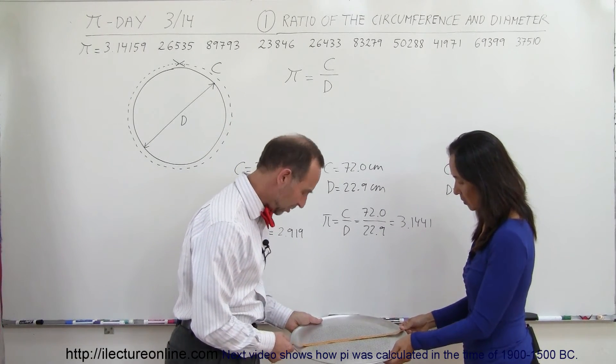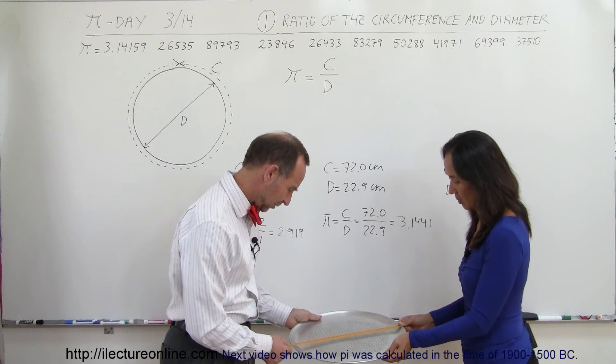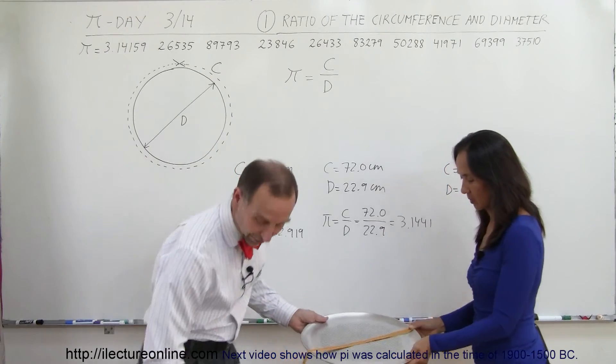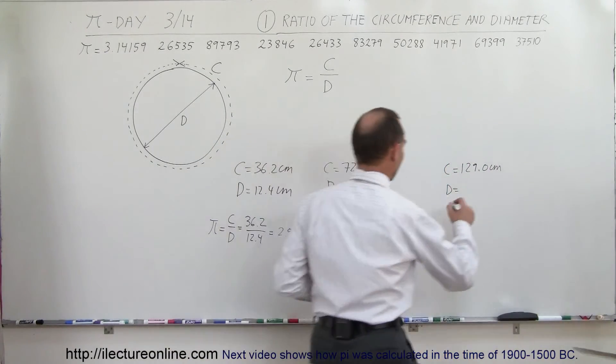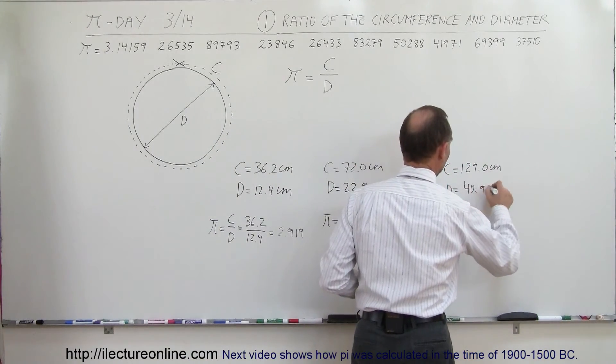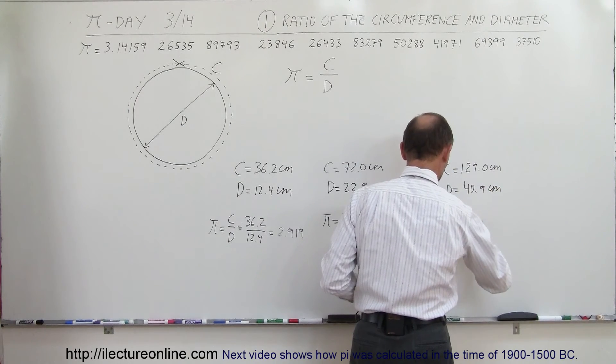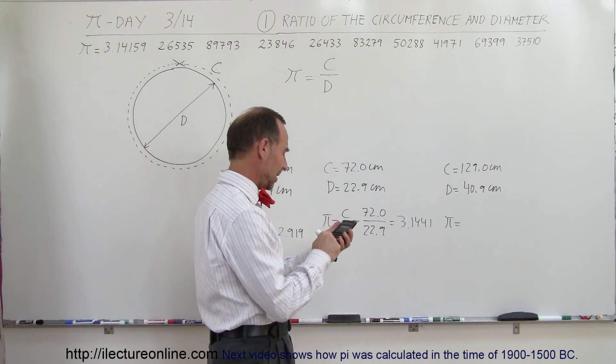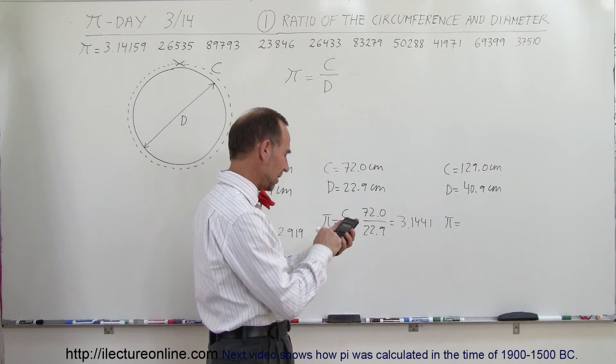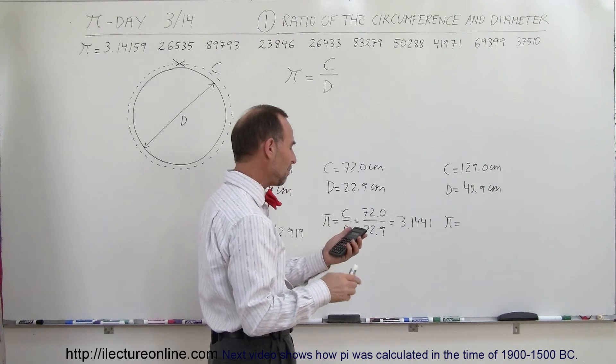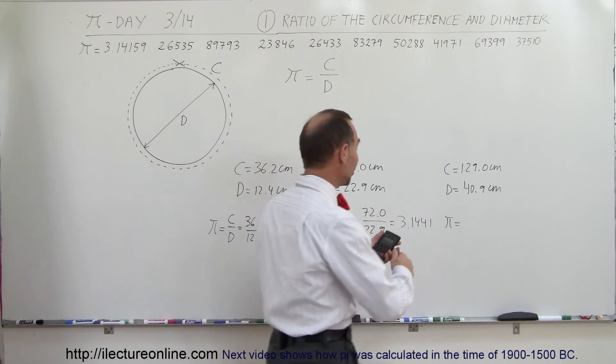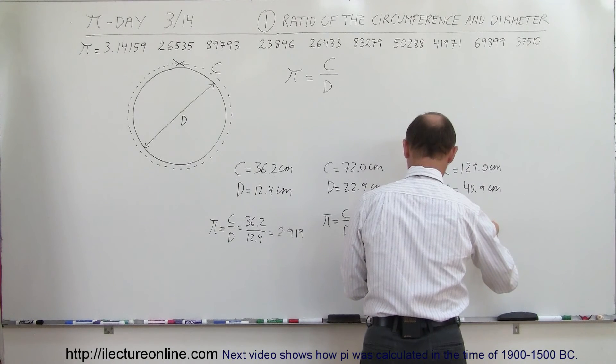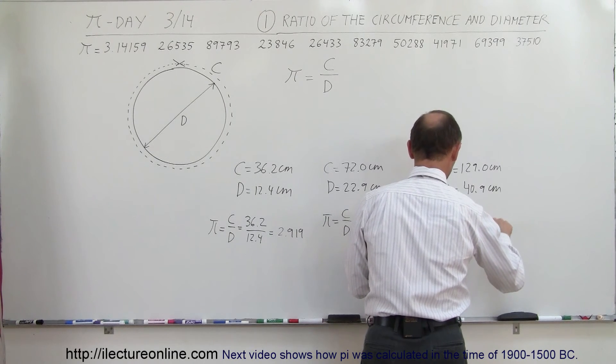And the diameter is equal to... right at the edge, and going back and forth. It looks like I would say 40.9 centimeters. So this should be our most accurate measurement if we did it correctly. Let's find out. 129 divided by 40.9 equals 3.1540.